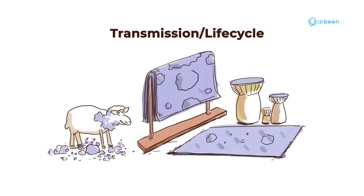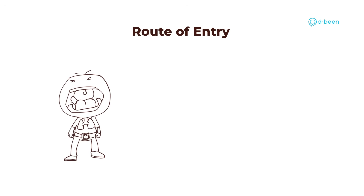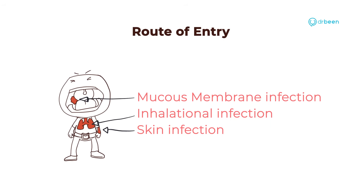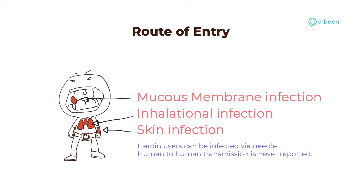In the US, drums and rugs made from goat leather from Haiti could have this pathogen on them. Humans get infected when handling these animal products, especially in the leather tannery industry. The route of entry can be through skin infection, mucous membrane infection, or inhalation into the airways. Heroin users can accidentally inject its spores via needles. Human-to-human transmission has never been reported.